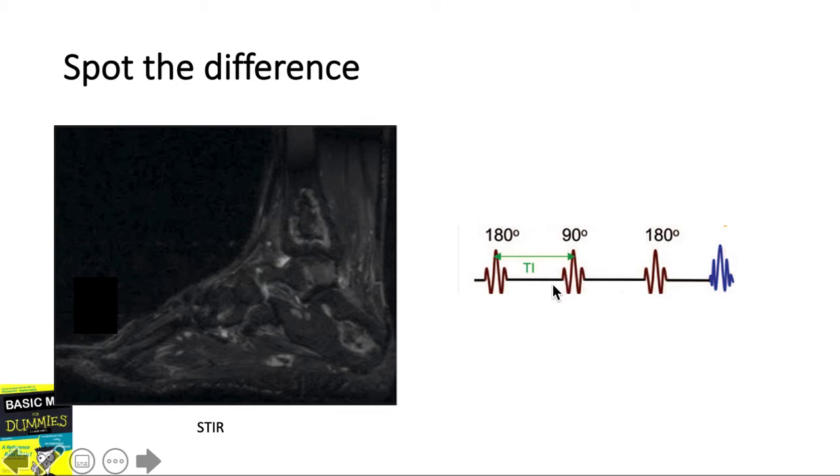Now since gadolinium has a short T1 property, a T1 shortening effect, its signal will be nulled together with the fat in a STIR sequence. So in other words, gadolinium will not be visualized in this image.